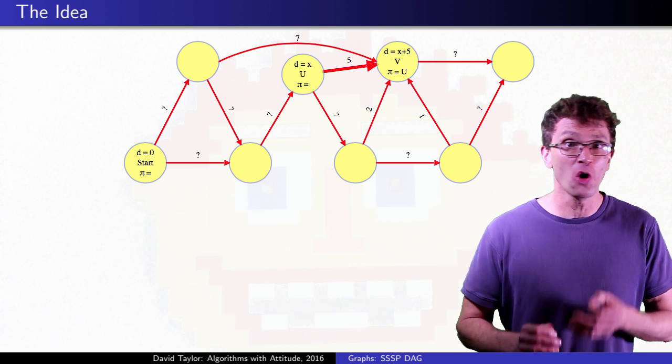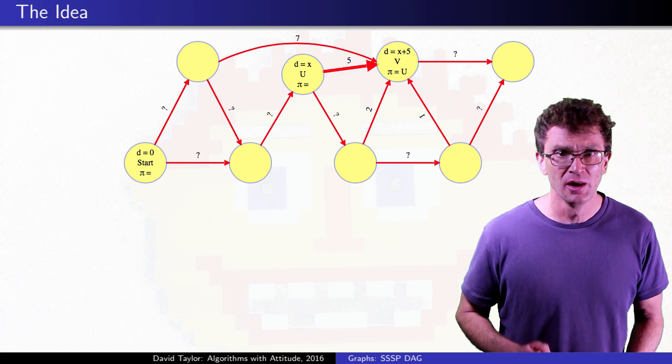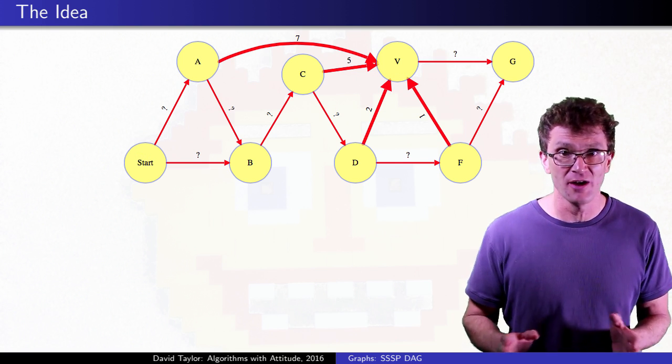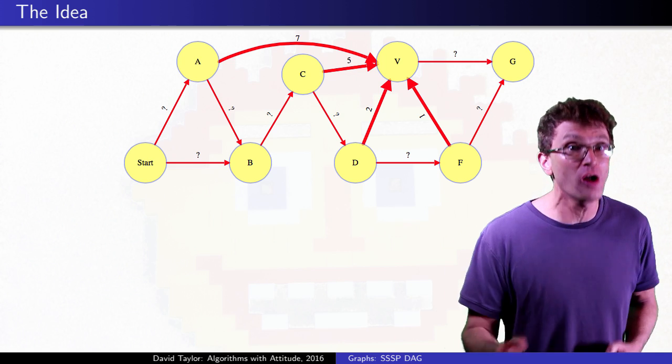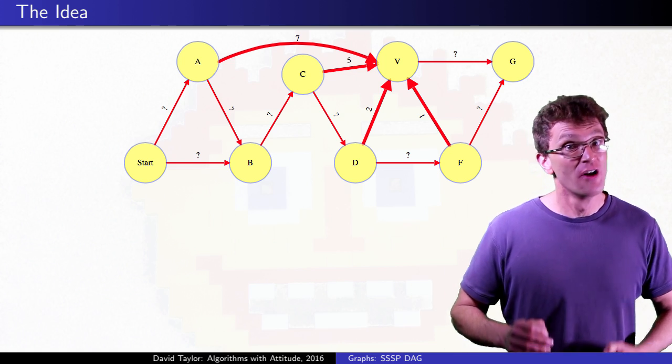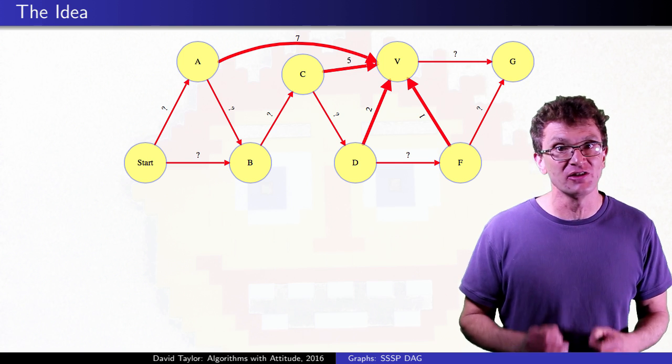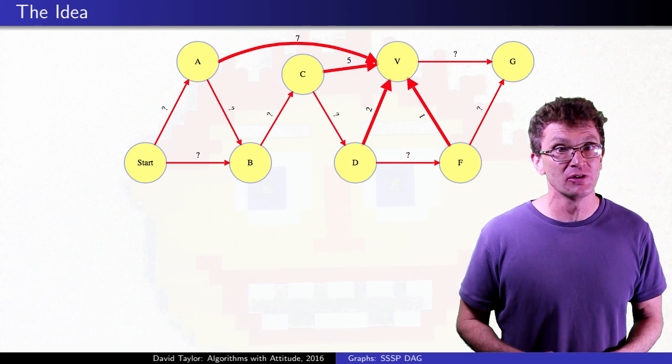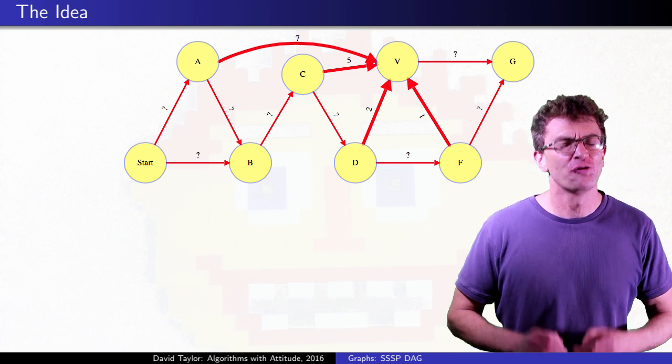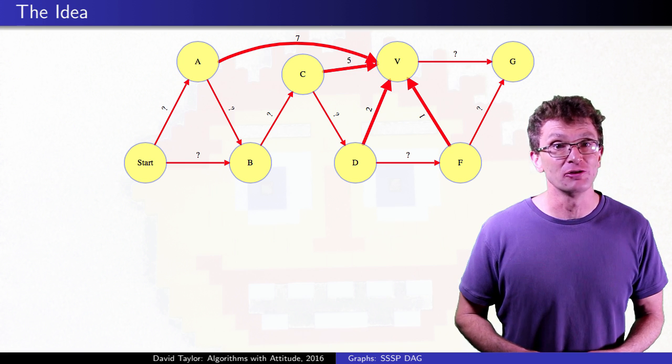The problem is, we don't know which vertex is v's predecessor when we start. Is it a or c or d or f, I don't know, but if we finish all vertices with an edge to v, for each of them get a final distance and then relax outgoing edges, all before getting to v, for sure that will include v's predecessor.